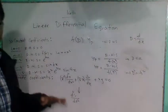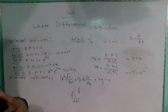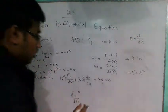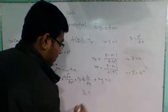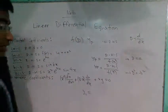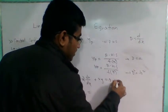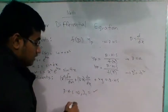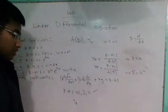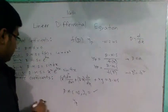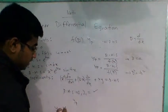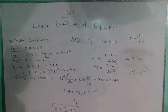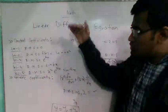The general solution consists of the complementary function and the particular integral. When the right-hand side is 0, we only have the complementary function; when it is not 0, we add the particular integral to get the general solution. So step by step, in each lecture, we will cover the details of each topic.